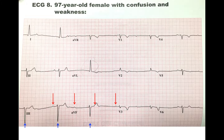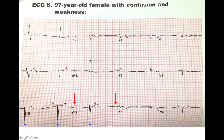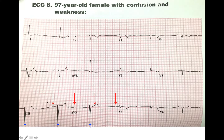So to go over everything again: we are looking at sinus bradycardia and a third degree AV block with AV junctional escape complexes. The blue arrows indicate junctional escape complexes, and the red arrows indicate P waves. Thanks.